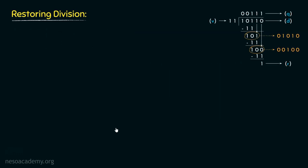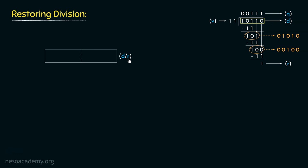Let's now observe the implementation. The number of bits in the dividend is 5. The size of the dividend matters the most in the hardware implementation of restoring division. Since it is 5 bits, we are going to have a 10-bit register named DR, where we first store the dividend and finally obtain the remainder. Alongside this, we will have another 10-bit register named V, where we place the divisor.